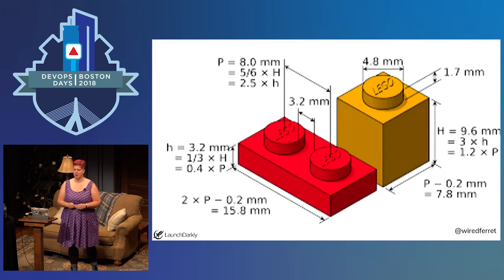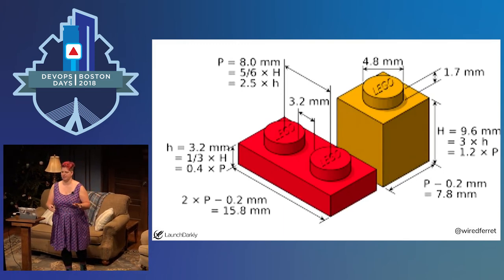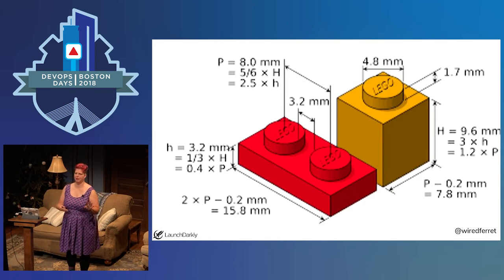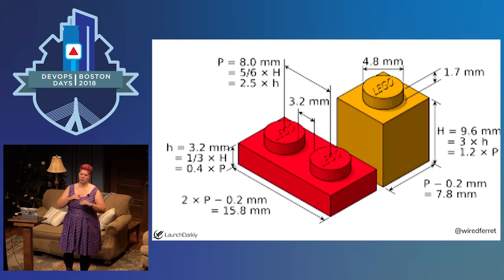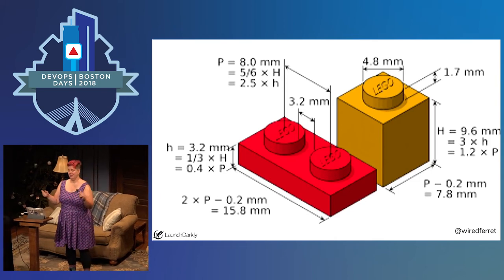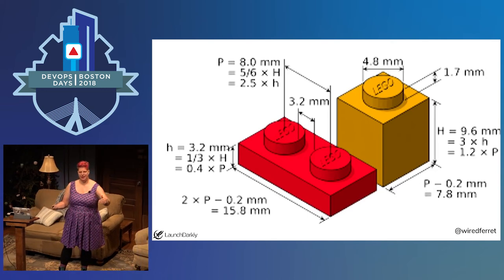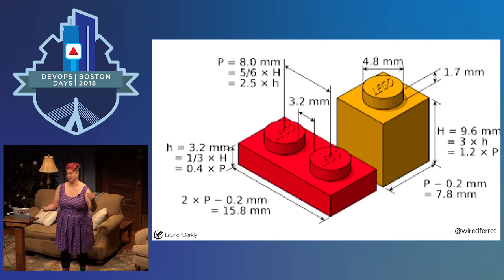When people build with Legos, they have a specific terminology that describes the number and depth of the studs so that other people can reliably duplicate the build. I love that there's a whole build method called SNOT — studs not on top. APIs are the same thing for your microservices. If you don't define exactly what's going out and what's going in, you're not doing anything useful.